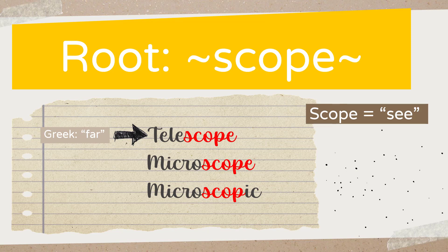Same thing with 'microscope.' The word 'micro' is also a root, so in this case we don't have a prefix or a suffix either. 'Micro' also has a Greek origin, meaning 'small.' So therefore, 'microscope' means something that allows you to see something small — and you know what a microscope does.